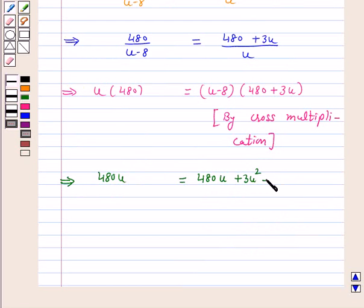We can rewrite this as 3u square plus 480u minus 480u minus 24u minus 3840 is equal to 0.